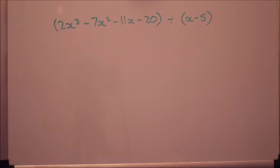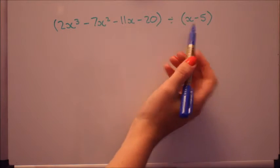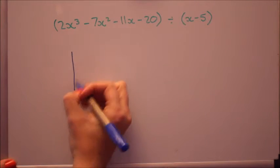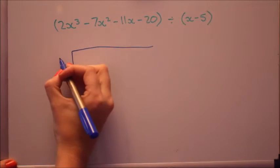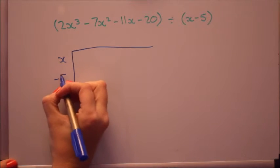Okay we're now ready to start long division. Now as I mentioned before I'm going to use a grid method. I'm dividing by x minus 5 so I'm going to draw a grid and put x and minus 5 down the side.